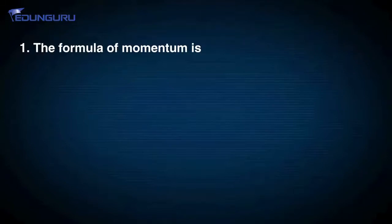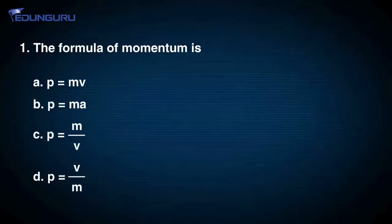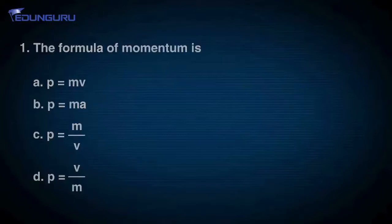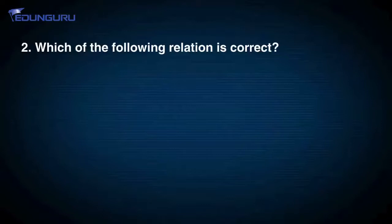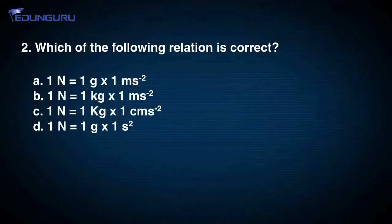Question 1: The formula of momentum is — Option A: P = MV, Option B: P = MA, Option C: P = M/V, or Option D: P = V/M. Question 2: Which of the following relation is correct? Option A: 1 N = 1 gram × 1 m/s², Option B: 1 N = 1 kg × 1 m/s², Option C: 1 N = 1 kg × 1 cm/s², Option D: 1 N = 1 gram × 1 s².